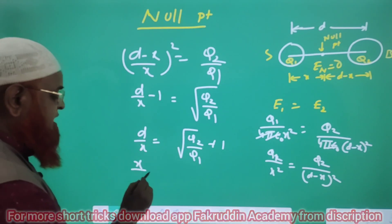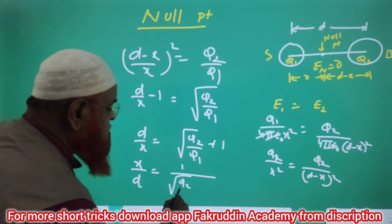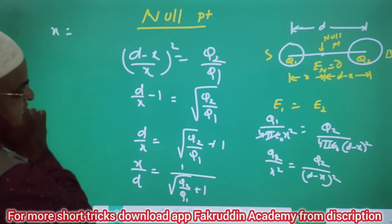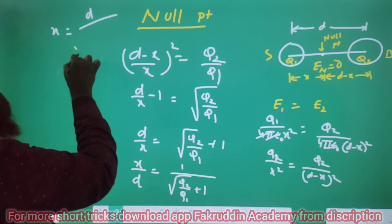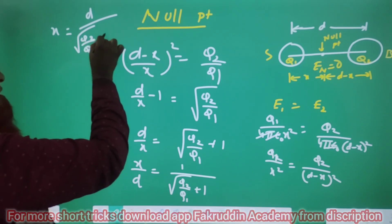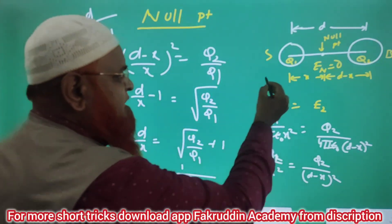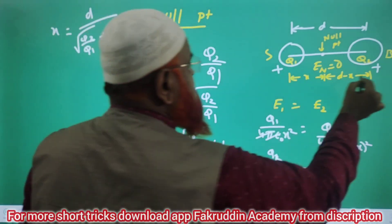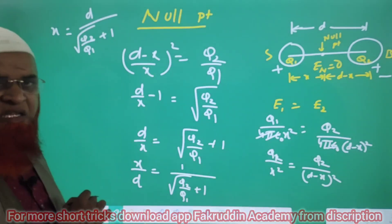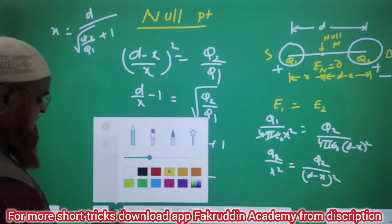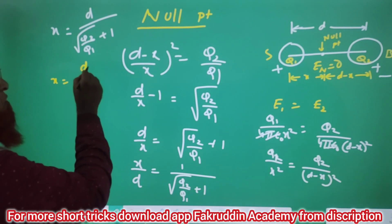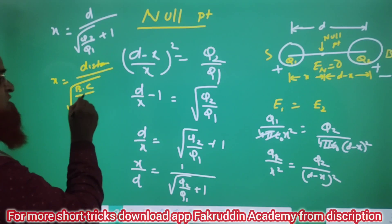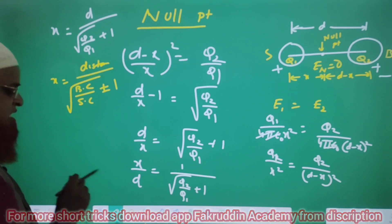If you make it reciprocal, X by D equals 1 divided by the square root of Q2 by Q1 plus 1. Our aim is to find out what X is. Therefore, X is nothing but D divided by the square root of Q2 by Q1 plus 1. If both charges are the same — that means both positive — you will get plus. And if one is positive and the other is negative, you will get minus. So in general, we can write: X equals distance divided by square root of (bigger charge by smaller charge) plus or minus 1.